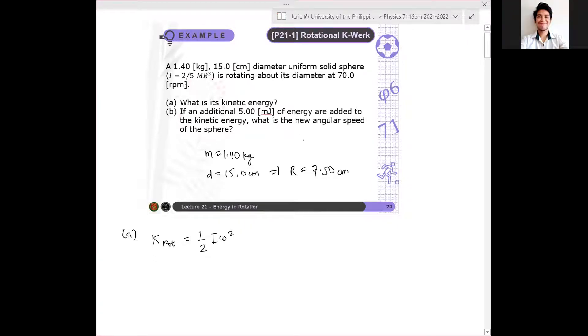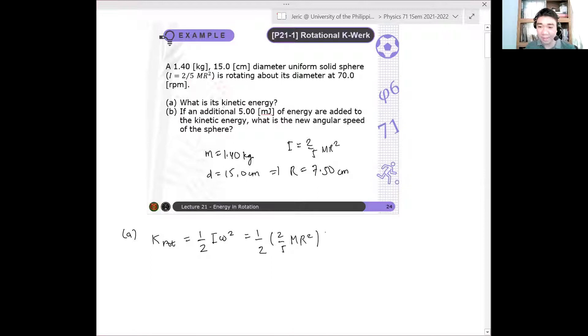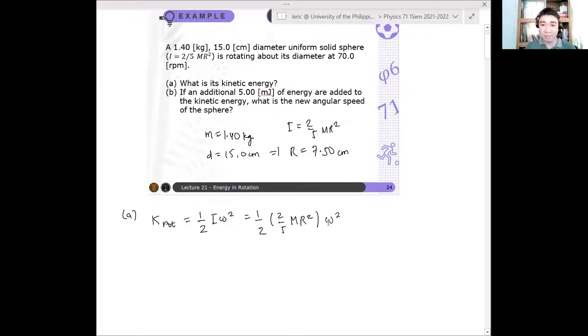So I is given. I is usually given in the problem. It's 2 over 5, MR squared. So this is simply one half times the moment of inertia, which is 2 over 5 MR squared times omega squared. That's given.